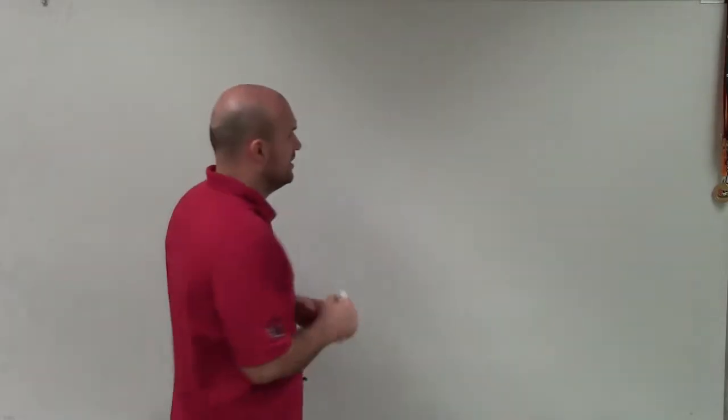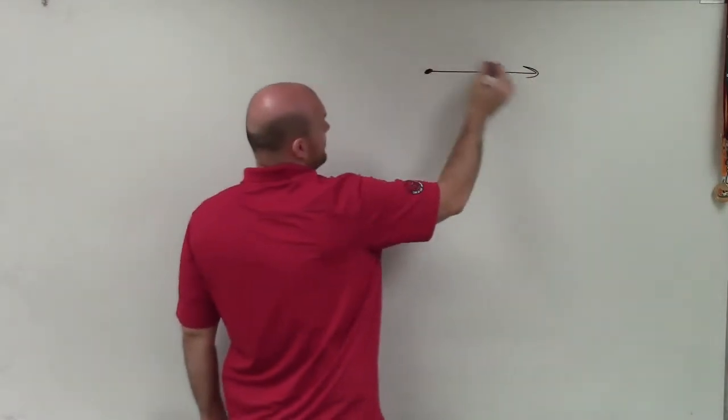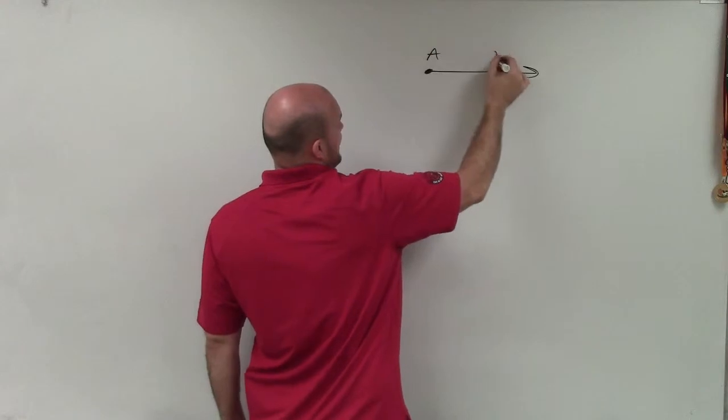Welcome. What I'd like to do is describe what exactly opposite rays are. We talked about how a ray is a line that has an endpoint and goes through another point A, B.